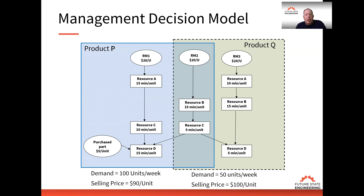What I have here is two products — product P and product Q — that are made up of different components, go through different resource steps to produce the product, and have different demands and different selling prices.